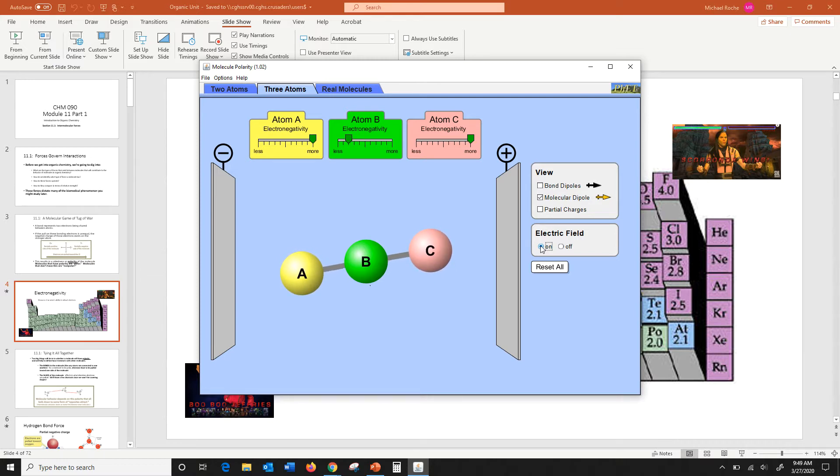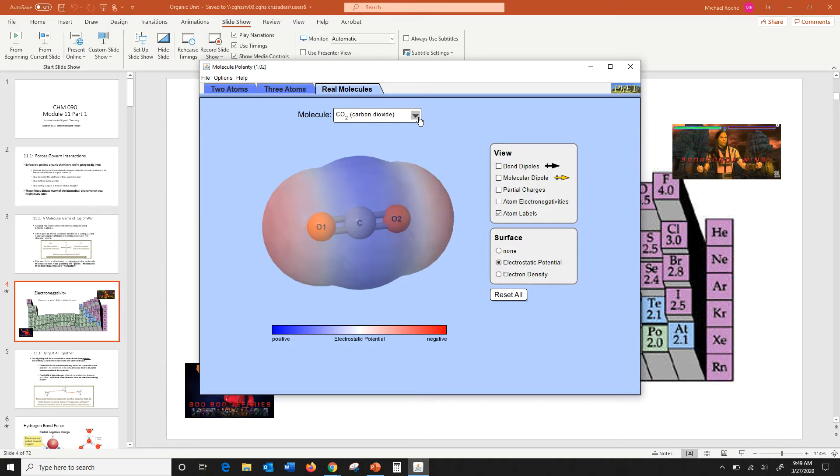Compare that to something like water. So let's take a look at water here. Water is right here. So water has that strongly electronegative oxygen, still very negative. It's with hydrogens, which are positive. But see, here now we have sort of a distinct positive and negative end.